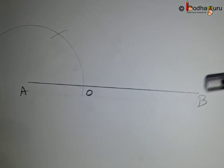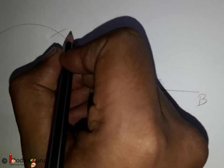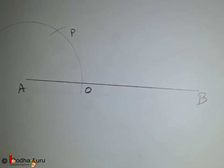This arc would intersect the previous arc at a point, say point P.